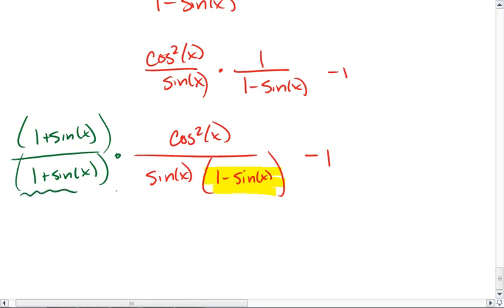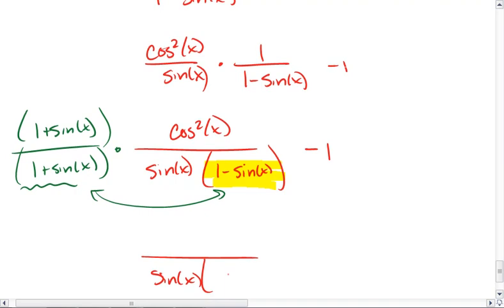And we multiply 1 plus sine of x with 1 minus sine of x. In the denominator we get sine of x times 1 squared, which is just 1, minus sine squared x.